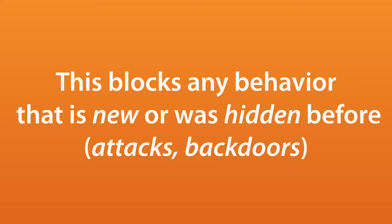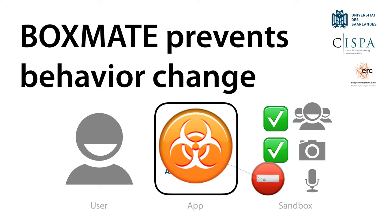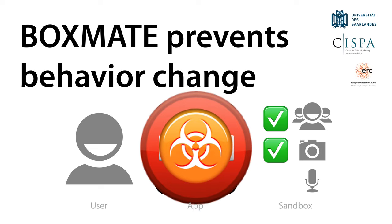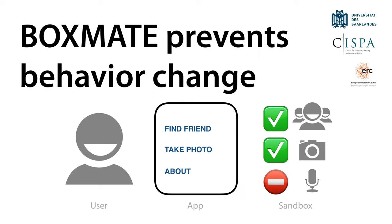Now assume that the app all of a sudden wants to do something different. This can be malicious behavior as part of the app, the result of a compromised app, or someone using a backdoor hidden in the software. BoxMate blocks all of these. Assume for instance some malicious app wants to secretly access your microphone to record and transmit every word — the sandbox will prohibit this. Sorry, no malicious behavior for you. The only way for a program to act maliciously is to do so already during testing, but then we see it in the first place.